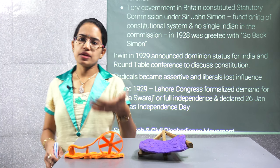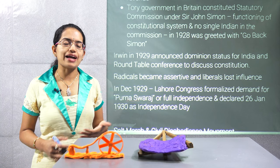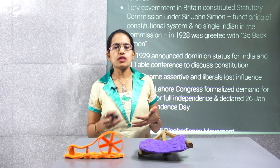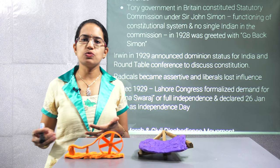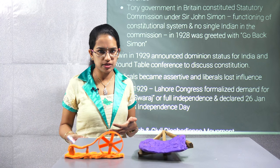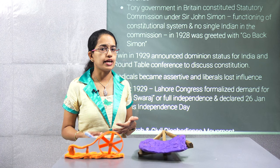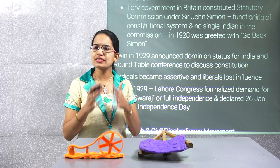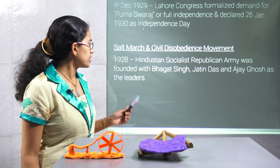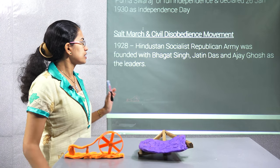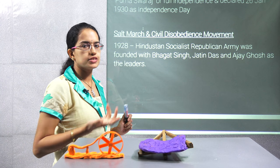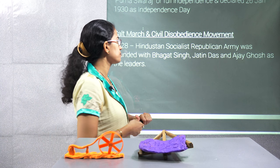When Gandhi came back from the second round table conference, he was highly disappointed. The only thing the government could do was release political prisoners at that time, and the pact was not successful. Initially, there were a few foundation stones before the civil disobedience movement.